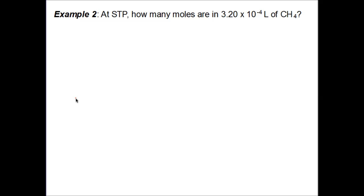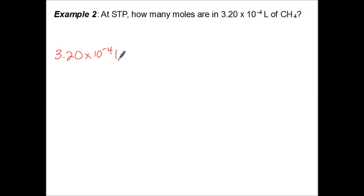At STP, how many moles are in 3.20 times 10 to the negative fourth liters of CH4? For all of you organic chemistry fans, CH4 is methane gas. Step one is to write down what we know: 3.20 times 10 to the negative fourth liters of CH4.